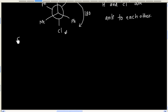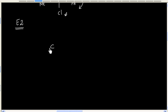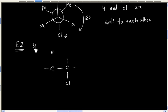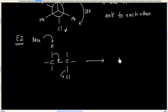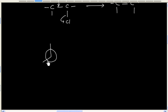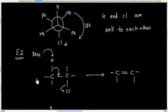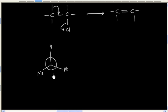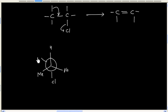Now, recalling the E2 mechanism: you have the alkyl halide, a base abstracts the hydrogen, and at the same time the leaving group departs, resulting in carbon-carbon double bond formation. Let us draw this molecule again — we have phenyl on one side and methyl on the other side. The base abstracts this hydrogen, giving a carbon-carbon double bond between the front carbon and the back carbon, and the chlorine leaving group departs.